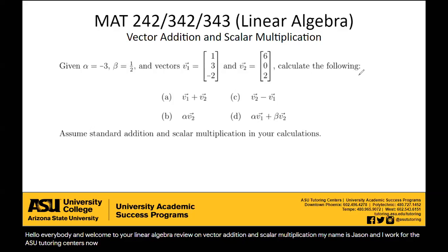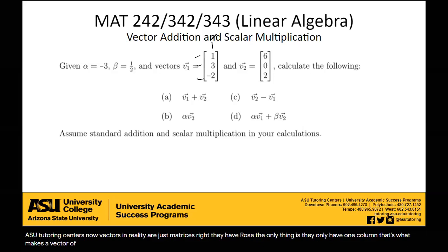Now vectors in reality are just matrices, right? They have rows. The only thing is they only have one column. That's what makes a vector a vector. They're matrices with one column. But because they're essentially matrices, all the same rules that apply to matrices apply to vectors.